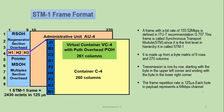We know the SDH frame consists of 9 rows and 270 columns. For example, in the STM-1 frame, the regenerator section overhead is placed in the first 3 rows and first 9 columns. Similarly, multiplex section overhead is placed in rows 5 to 9 in columns 1 to 9. We also have administrative unit pointers which point to the virtual container payload, placed in row 4.